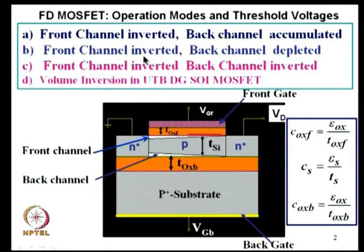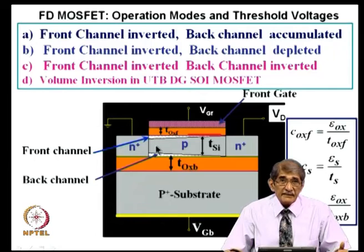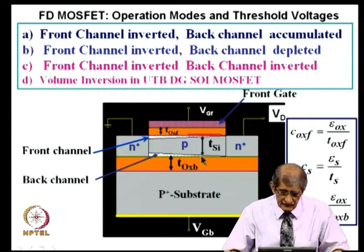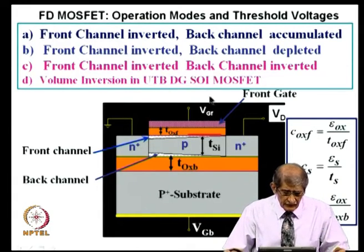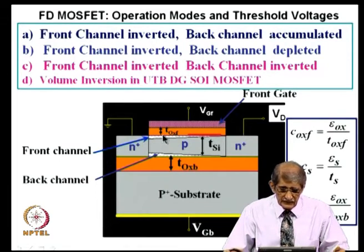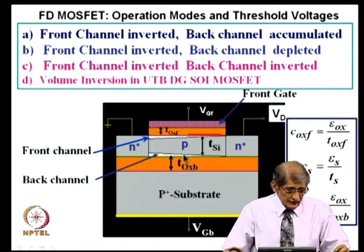We can have the front channel inverted all the time, but the back channel can be either accumulated, depleted, or inverted — so two channels are there. Now, if I make the thickness of the SOI layer very thin — T silicon — to nanometer scale, say 10 or 20 nanometers, then a phenomenon called volume inversion takes place, where both inversion layers will be merging.